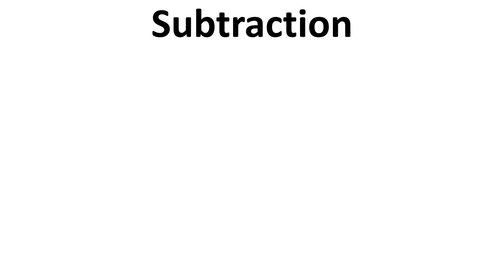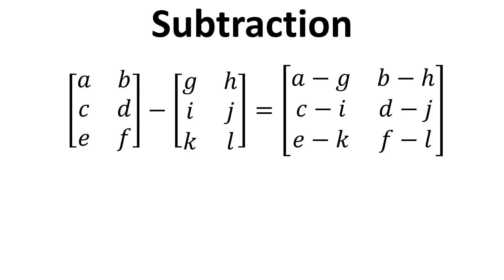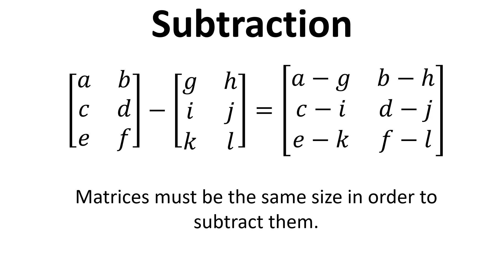Subtraction works in a similar way, so we can subtract one matrix from another if they're the same size. Again, we just work out for each position—for the first position, row 1 column 1, it's just A take away G, and so on. That's fairly straightforward, and they need to be the same size in order to subtract them.